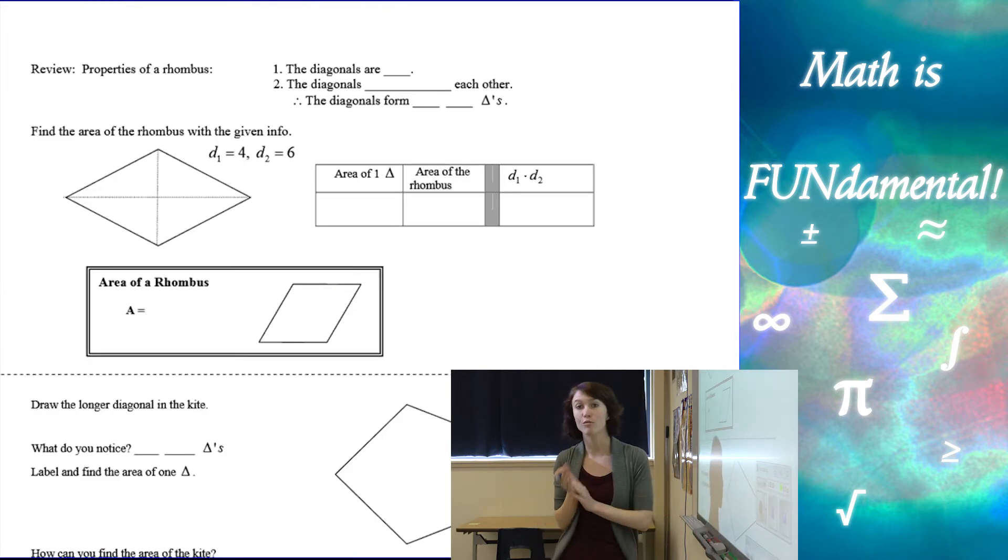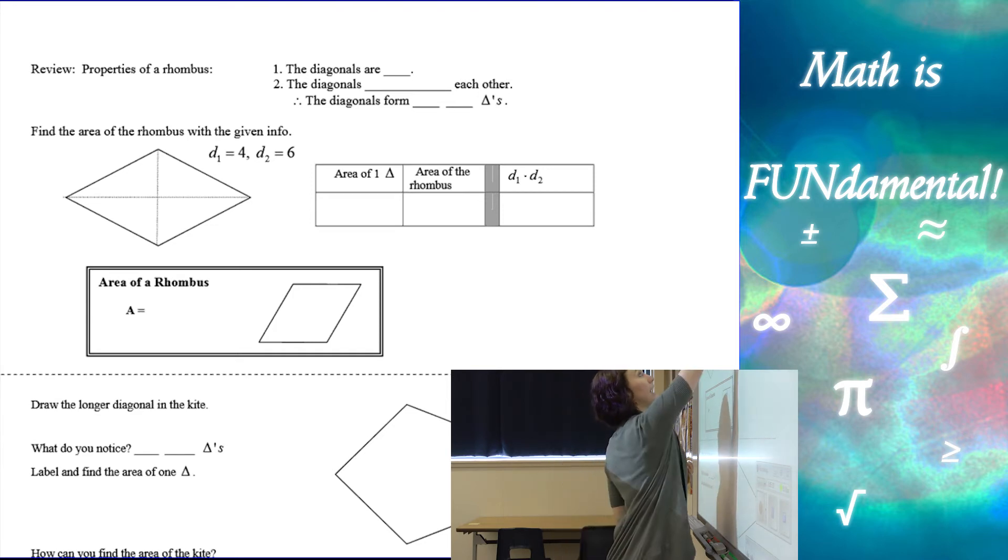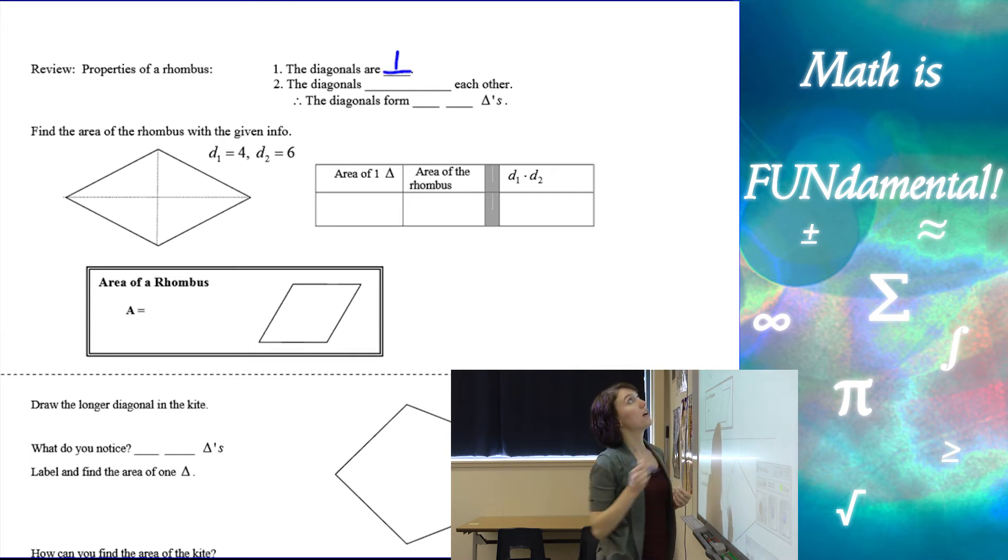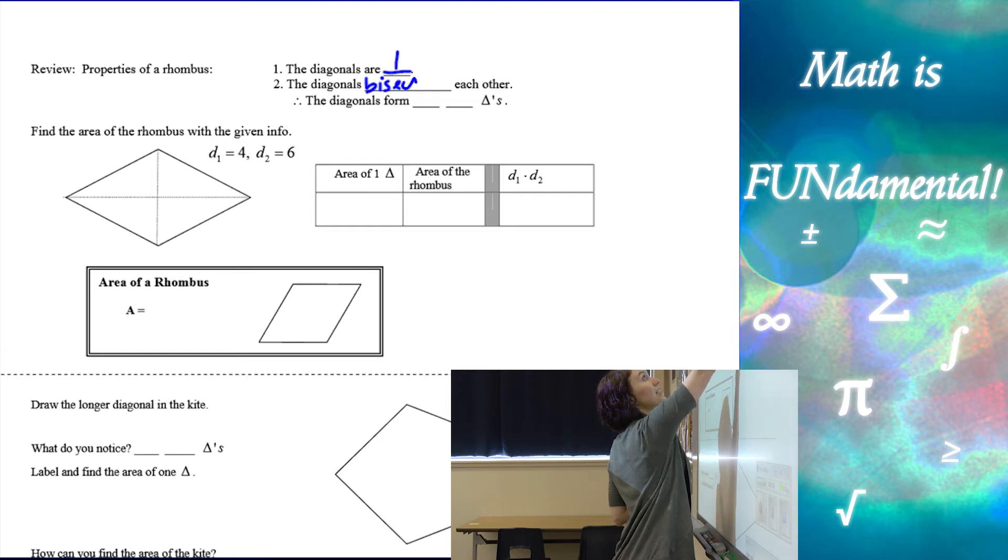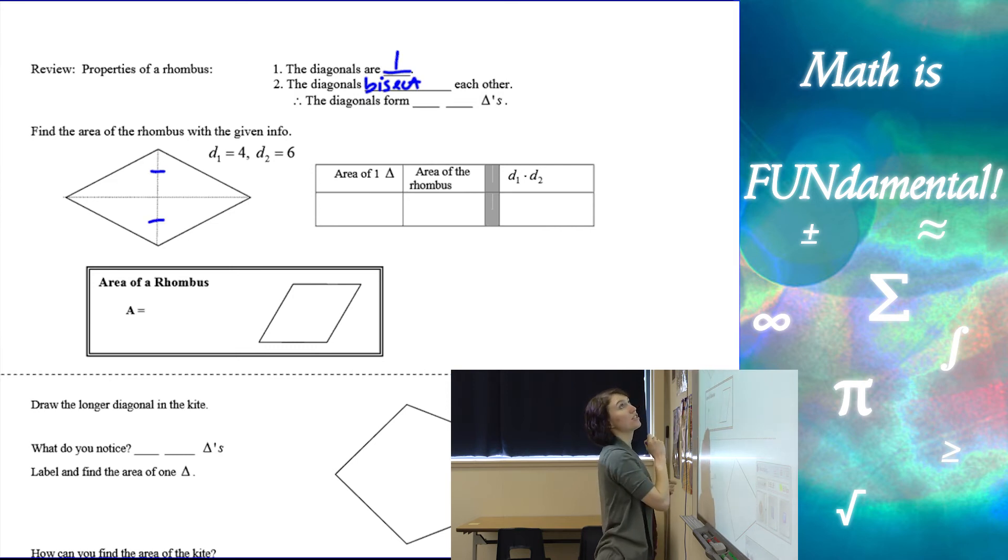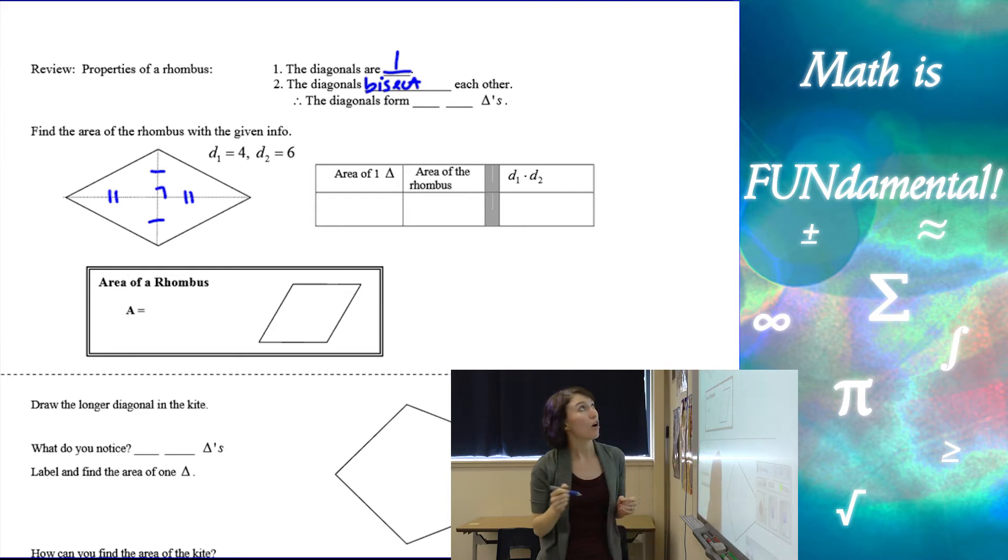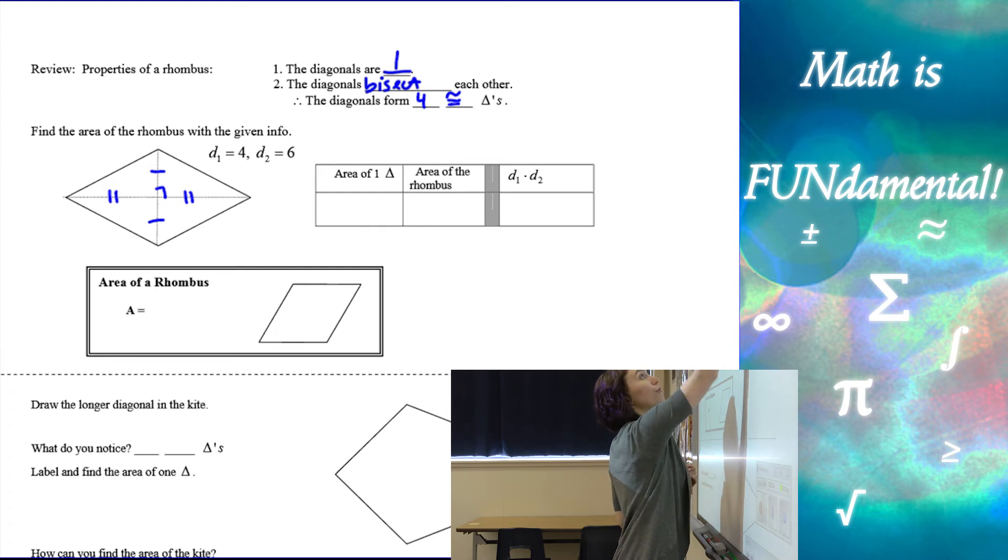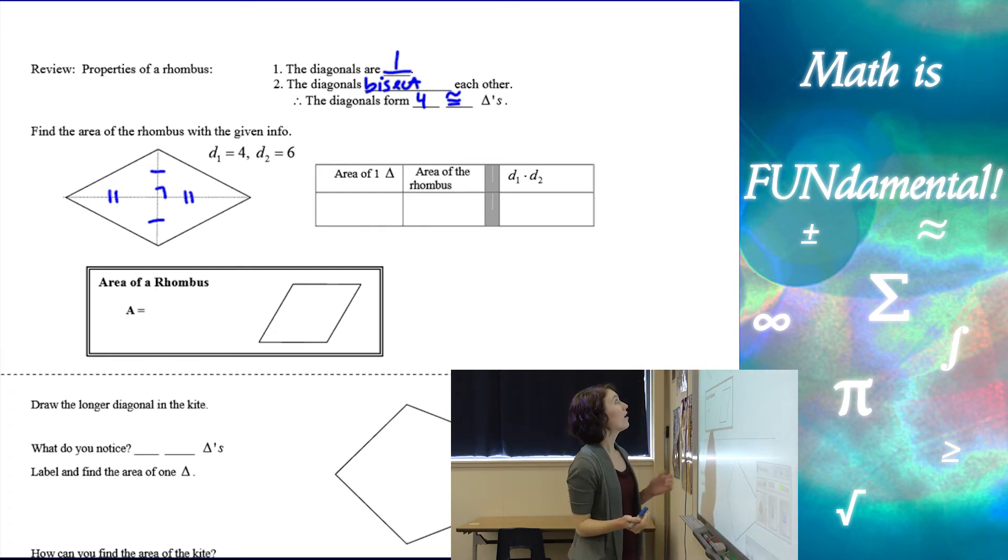Moving on to the rhombus. So just a little review on properties of a rhombus. We know that the diagonals of a rhombus are always perpendicular to each other. We also know that the diagonals bisect each other. So if we look at this picture of a rhombus and we have these diagonals bisect each other and they're perpendicular, we end up with four congruent triangles. So let's look at this and see if we can figure out how to find the area without even knowing the formula.